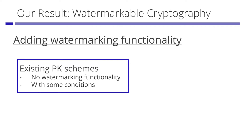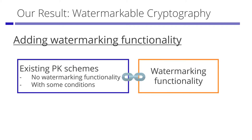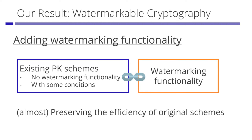In this work, we present how to add watermarking functionality to existing public key cryptographic primitives which do not have watermarking functionality. More specifically, we show that if a public key scheme satisfies some conditions, it is watermarkable. The efficiency of the watermarkable schemes is almost the same as that of the original schemes.